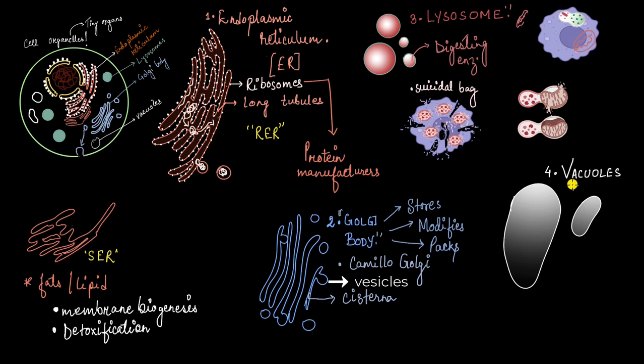Vacuole simply means an empty space in a cell. Now, the empty vesicles formed from the Golgi body, they don't remain empty for very long because the vacuoles are used as a pantry or storage unit by the plant's cells. Anything that the cell has in excess, it is sent to the vacuole.